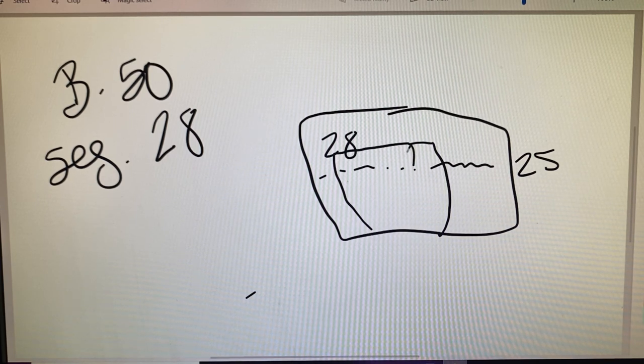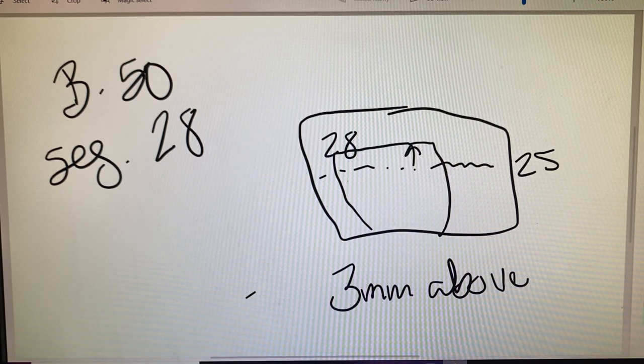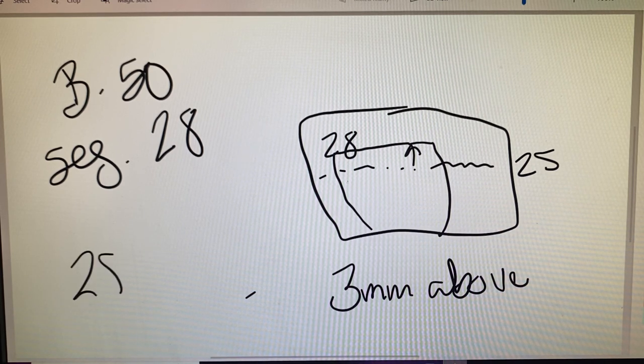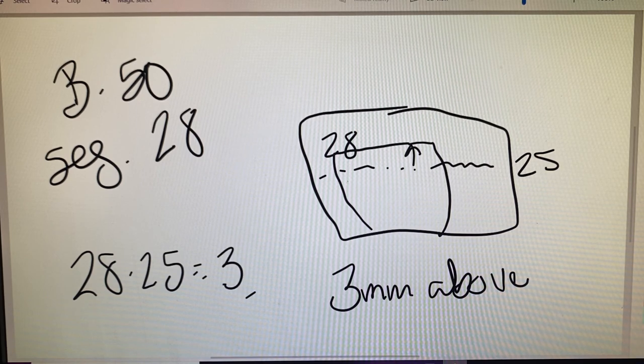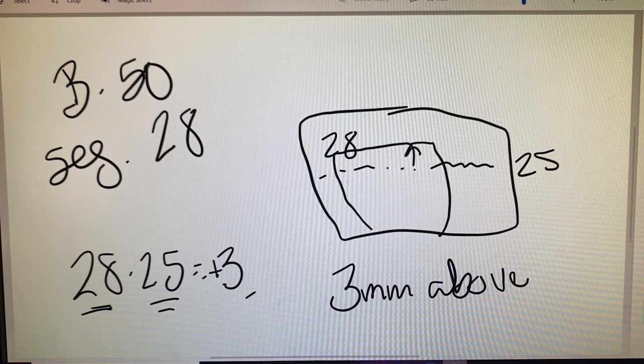So the seg is actually 3 millimeters above our datum line. In this case, you can do your 28 minus 25 equals that difference of 3. We can see that our seg is higher than our datum. So it's a plus 3. It's up 3 millimeters higher. So we've got our measurement there.